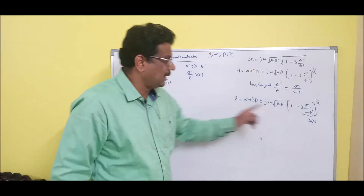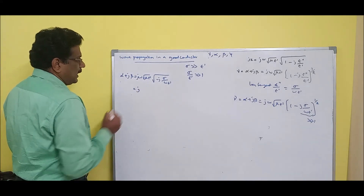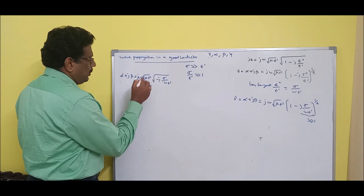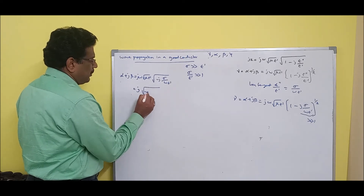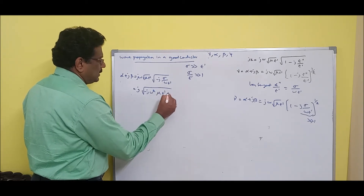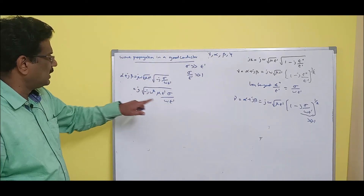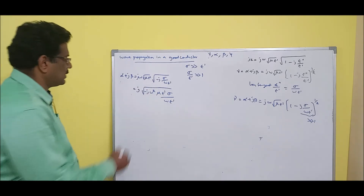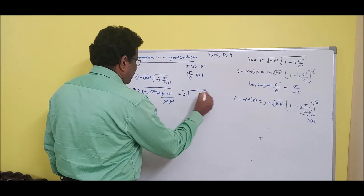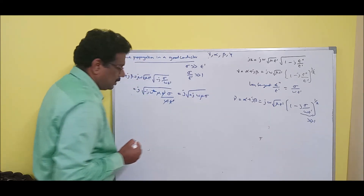The 1 is removed because it is negligible compared to the larger term. Bringing j inside the root, and noting that omega squared divided by omega cancels one omega, and epsilon-dash cancels as well, the result simplifies to j * root(minus j * omega * mu * sigma).